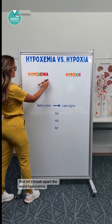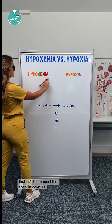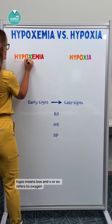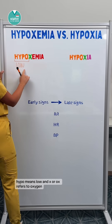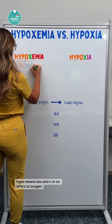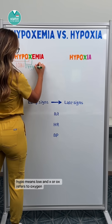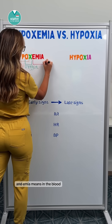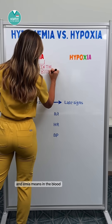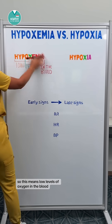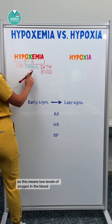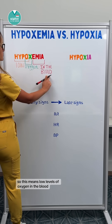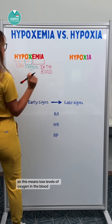First, let's break apart the word hypoxemia. Hypo means low, ox refers to oxygen, and emia means in the blood. So this means low levels of oxygen in the blood.